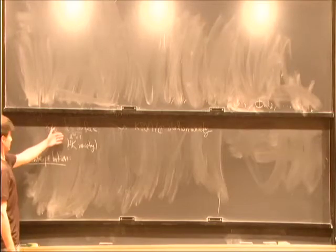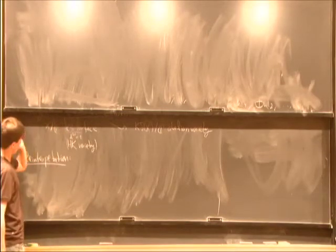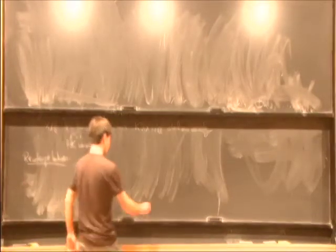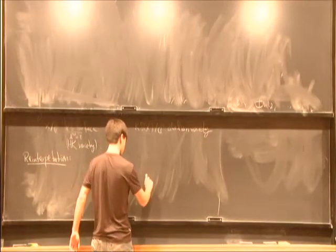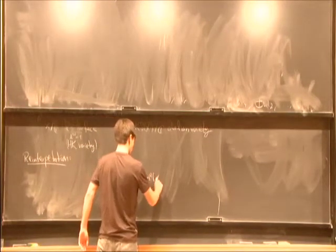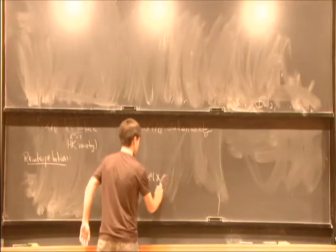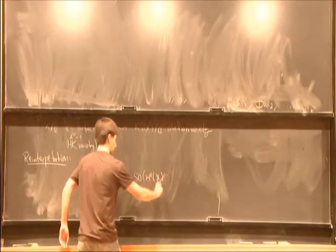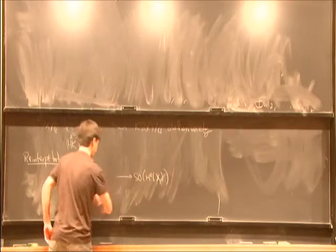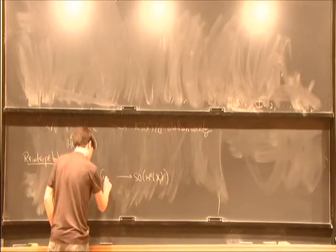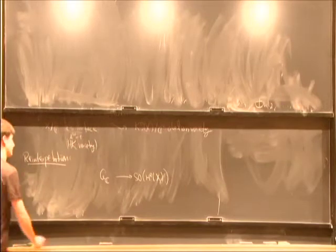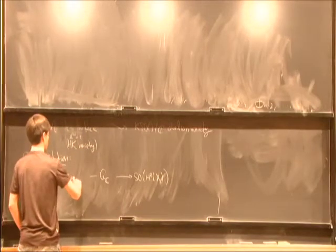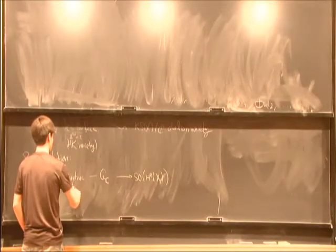Just take on faith that this H^2 we can think of as a motive over C. Won't be precise about what that means yet. And as such, we get a representation of a group, which we call the motivic Galois group.